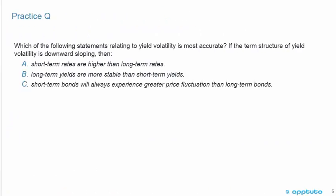We'll finish this LOS with one quick practice question on the theory. Which of the following statements relating to yield volatility is most accurate? If the term structure of yield volatility is downward sloping, then: A, short-term rates are higher than long-term rates; B, long-term yields are more stable than short-term yields; or C, short-term bonds will always experience greater price fluctuation than long-term bonds.